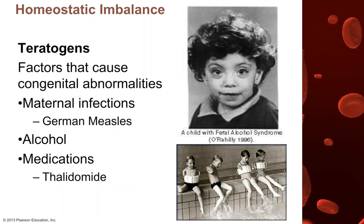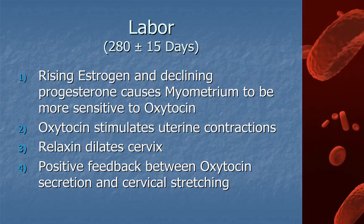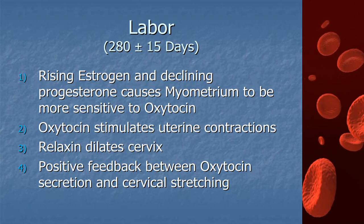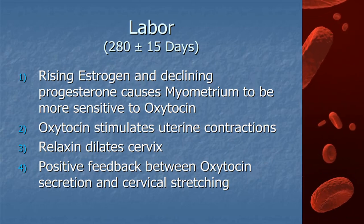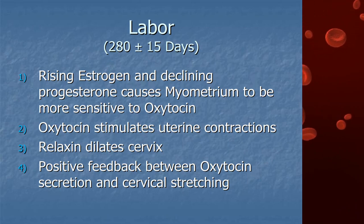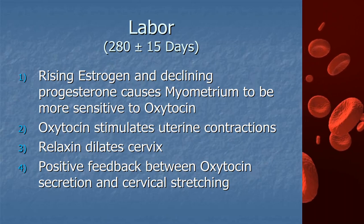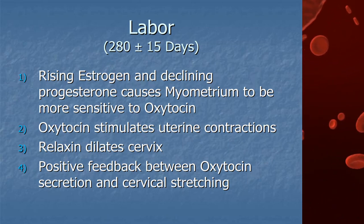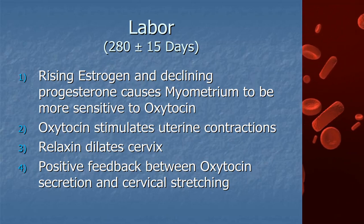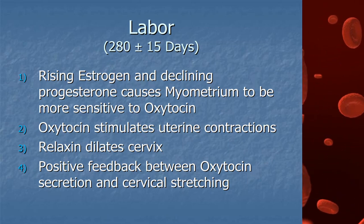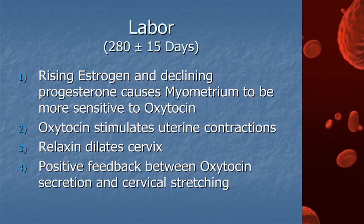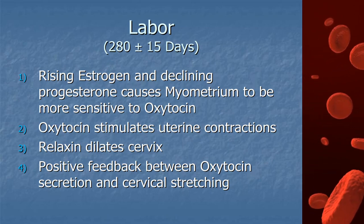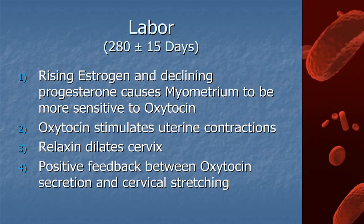Parturition, or labor, is the process of giving birth to a baby. The onset of labor is actually determined by the fetus, not the mother. Late in pregnancy, the fetus secretes increasing amounts of cortisol, which stimulates the placenta to secrete large amounts of estrogens. These estrogens stimulate the myometrial cells of the uterus to develop numerous oxytocin receptors and antagonize progesterone's quieting effect on the uterus, making the myometrium more and more irritable. As labor nears, the fetus secretes oxytocin and the placenta secretes prostaglandins, both stimulating smooth muscle contractions in the uterus and signaling the onset of true labor. These contractions then initiate a positive feedback loop between the hypothalamus, pituitary, and the uterine myometrium to facilitate delivery.